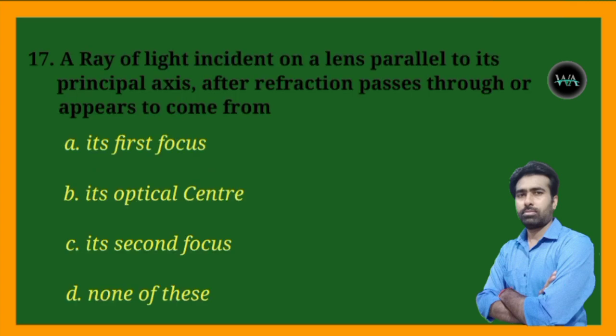Next question: a ray of light incident on a lens parallel to its principal axis — after refraction passes through or appears to come from — its first focus, its optical center, its second focus, or none of these?